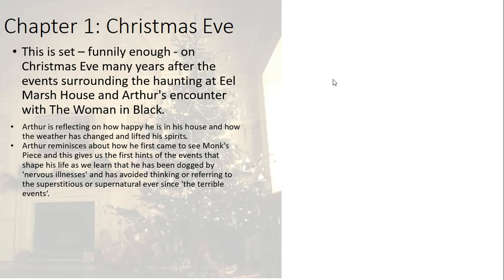Arthur discusses the nervous illnesses he suffered from, and talks about avoiding anything superstitious or supernatural ever since the terrible events. Here we see Hill using techniques that will define this novel — she drops hints and foreshadows things to come later in the narrative. She's doing it in a very intriguing way, playing with chronology, because she's foreshadowing things that have already happened. This is part of the tradition of ghost storytelling — often a story that happened some time ago, retold through a frame narrative.